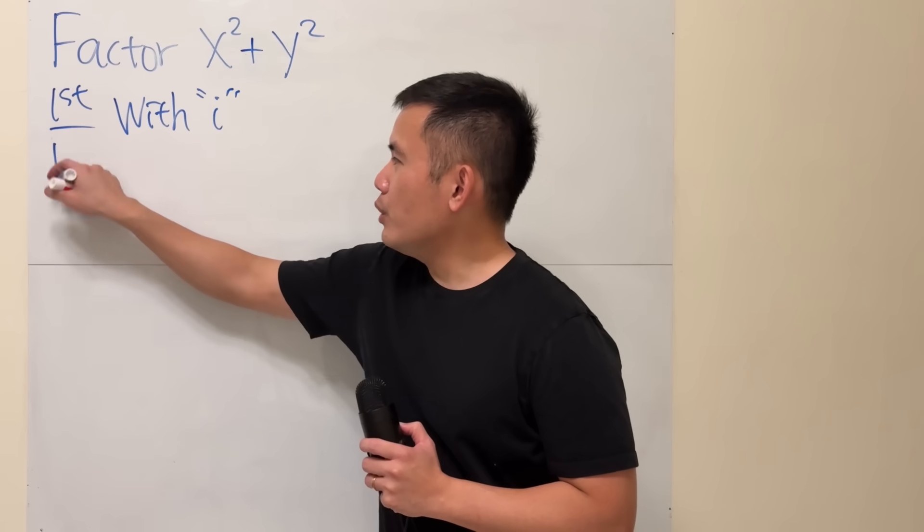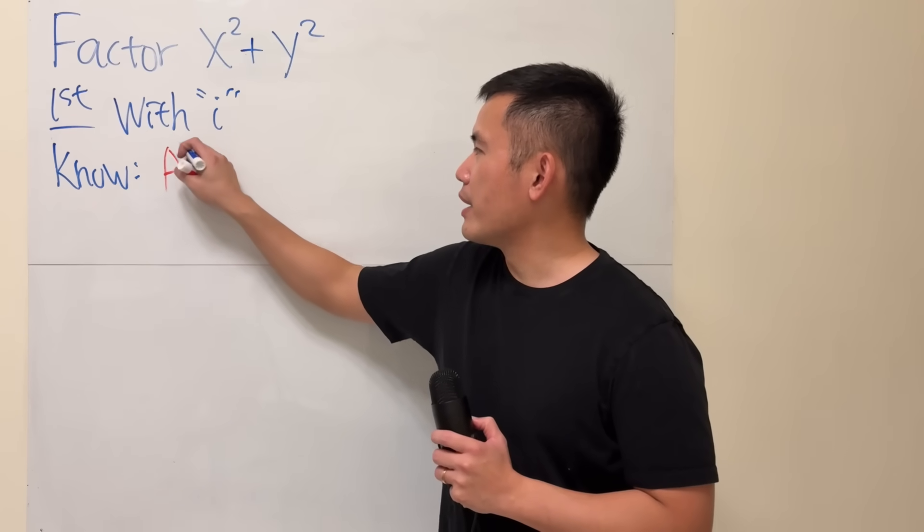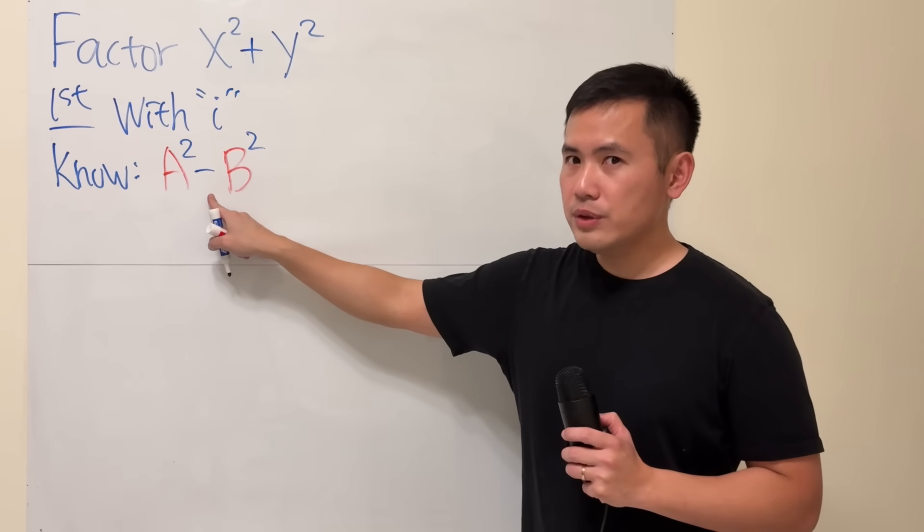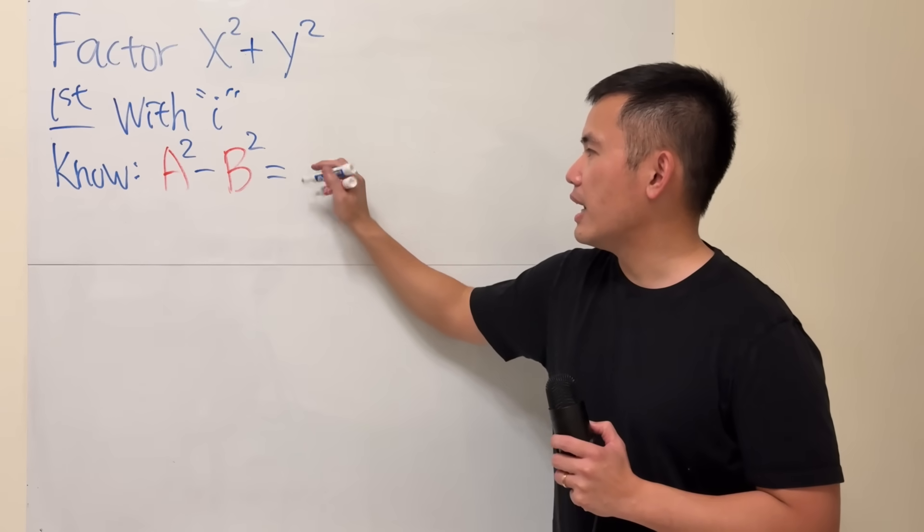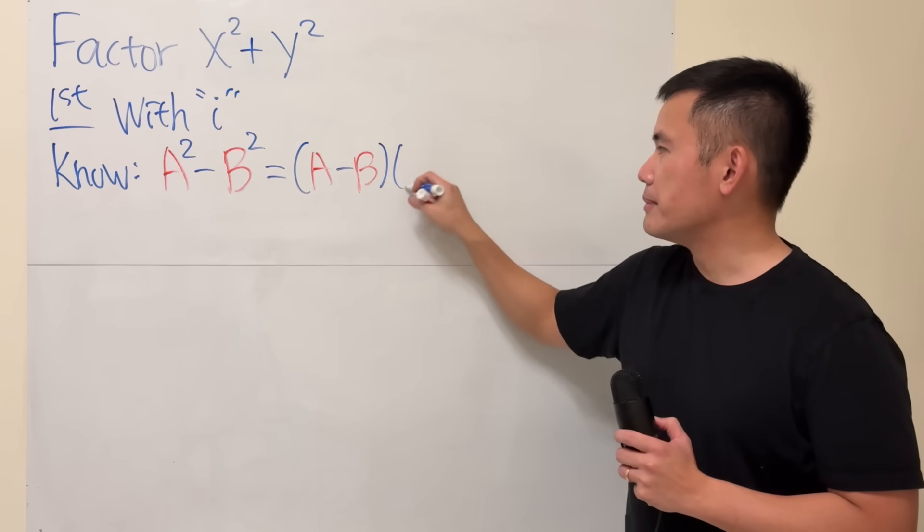All right, so here's the deal. We know the following. When we have a squared minus b squared, the difference of two squares can easily be factored as a minus b times a plus b.